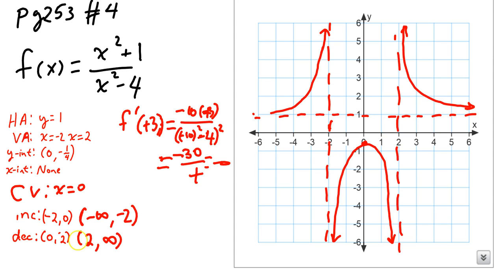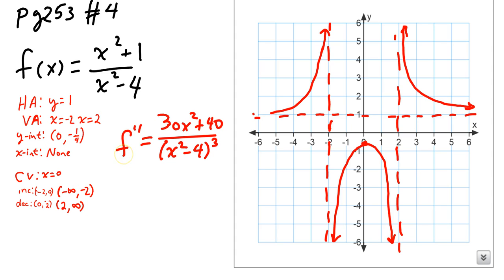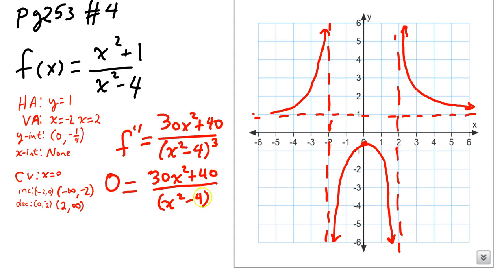I've figured out my increases and decreases from the first derivative. Now let's take a look at concavity. Here's the second derivative. To find points of inflection, I set the second derivative equal to 0. The denominator cancels when I cross-multiply, but when I solve the numerator I'd end up square-rooting a negative number — which is imaginary. So there are no points of inflection on this graph, meaning there's no place where concavity changes.